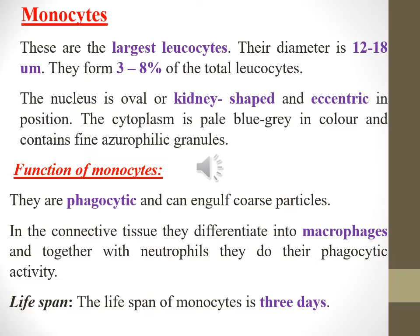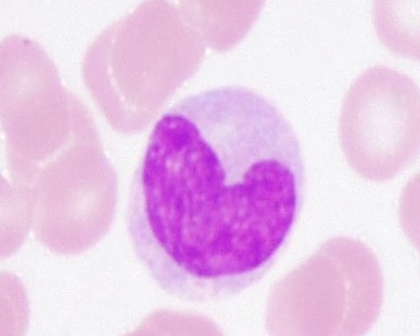Monocytes are the largest leukocytes, with a diameter of 12 to 18 micrometers. They form 3 to 8 percent of total leukocytes. The nucleus is oval or kidney-shaped and eccentric in position. The cytoplasm is pale blue-gray and contains fine azurophilic granules. Functions: they are phagocytic and can engulf coarse particles in connective tissue. They differentiate into macrophages and together with neutrophils perform their phagocytic activity. The lifespan of monocytes is about three days.